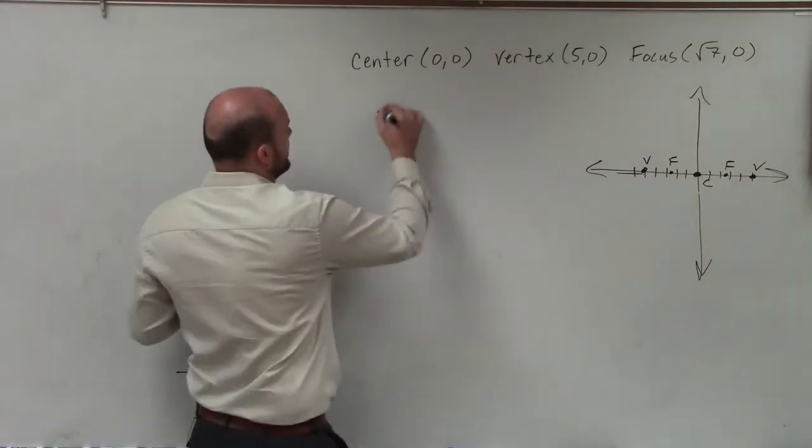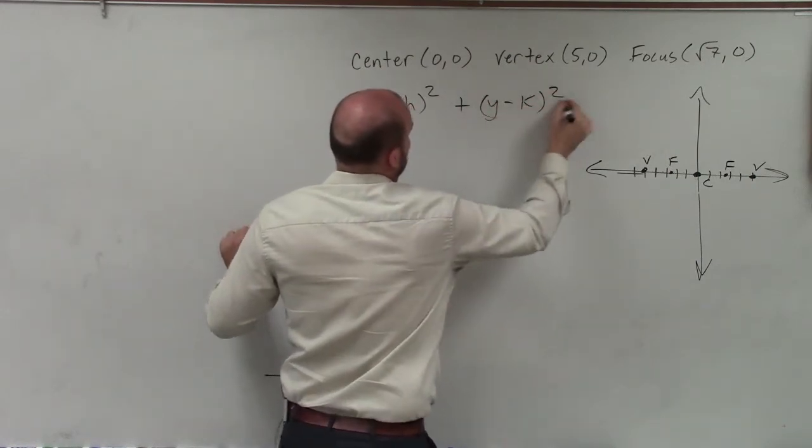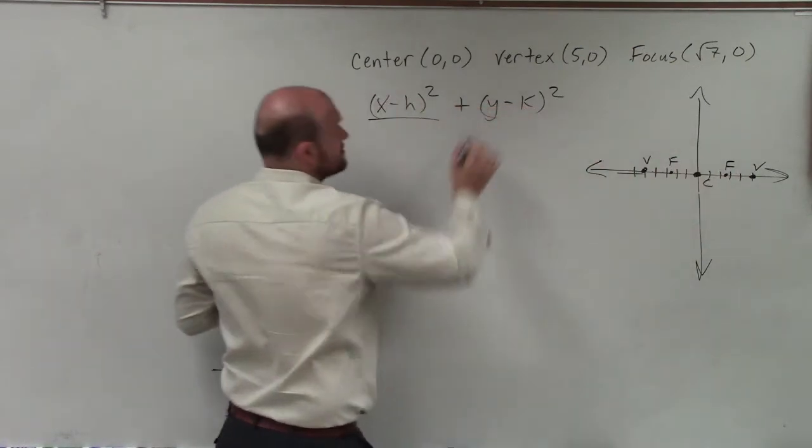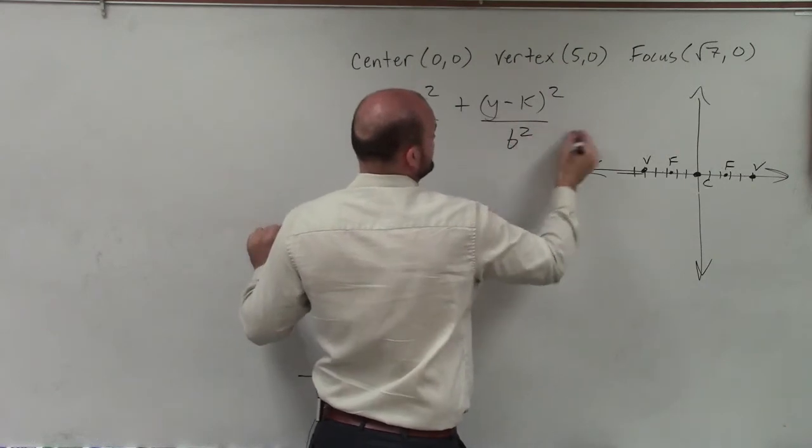So therefore, to write the equation, I'll have x minus h squared plus y minus k squared, where a squared is the distance from the center to your vertex, which is 5, over b squared.